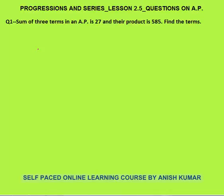First, you should try to solve it yourself, then look at how I have solved it. This question can be solved in two ways. The first is the general method — you know that three terms in AP can be taken as a, a+d, and a+2d. These are the first three terms. The question states that the sum of three terms is 27.